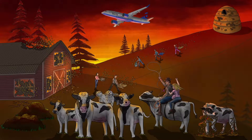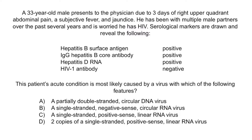Now that we've covered the image, let's review with a question. A 33-year-old male presents to the physician due to three days of right upper quadrant abdominal pain, a subjective fever, and jaundice. He has been with multiple male partners over the past several years and is worried he has HIV. This patient's acute condition is most likely caused by a virus with which of the following features: A) a partially double-stranded circular DNA virus; B) a single-stranded negative sense circular RNA virus; C) a single-stranded positive sense linear RNA virus; or D) two copies of a single-stranded positive sense linear RNA virus.